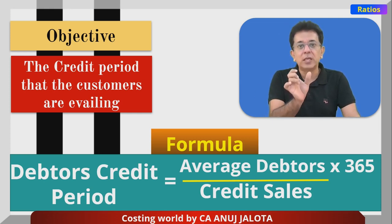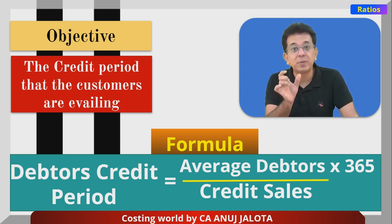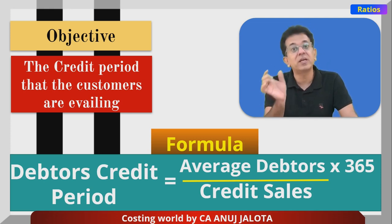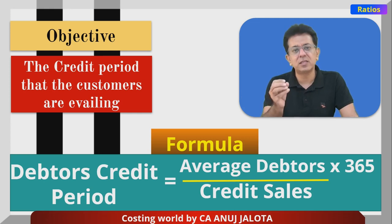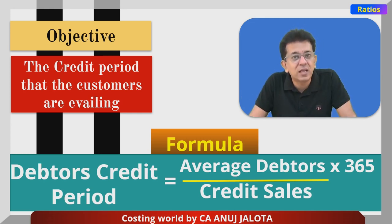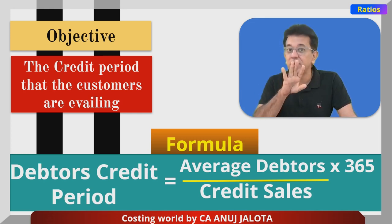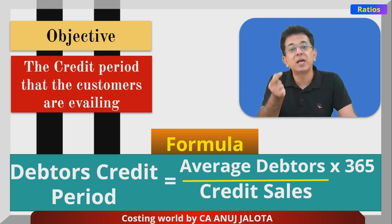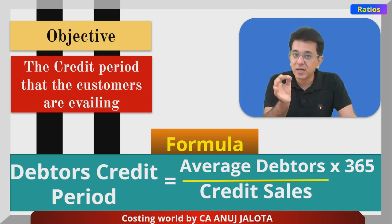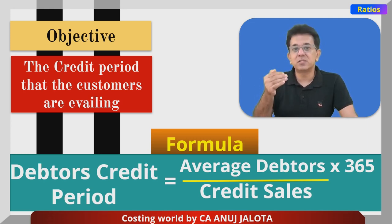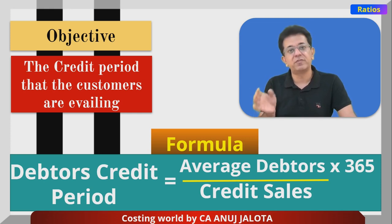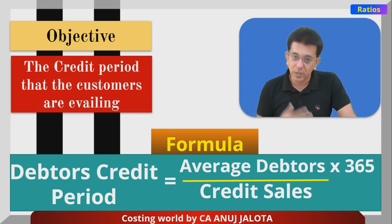Once you compute this, it is usually compared with the credit period that we had given to customers, or with the credit period of the industry. Suppose our collection period is 30 days but we had given customers a credit period of 20 days — so our collection department is not doing a good job. Sometimes this is also compared with the industry average to find out whether we are doing good or bad.